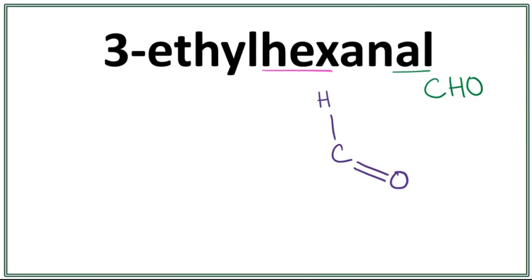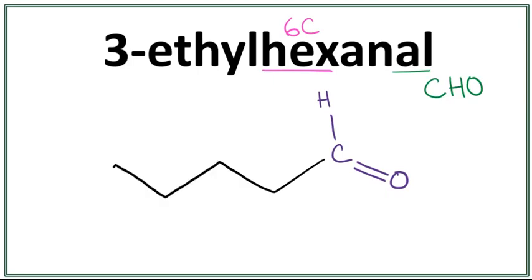The 'hex' here means that it has 6 carbons in the longest carbon chain. A trick to draw this is that you always count till 1 less than the number of carbons you want to draw. So we draw 5 segments: 1, 2, 3, 4, 5.